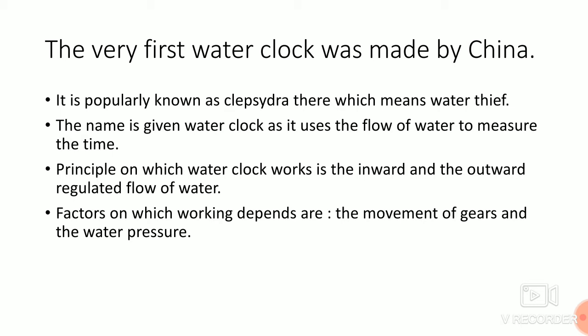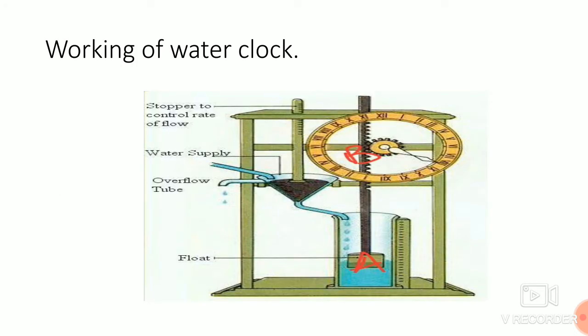Let us now understand the working of the water clock. As you can see, it is the same diagram. We need to focus on two parts: the parts marked as point A and the parts marked by point B. The point A is a cork which is floating on the water.